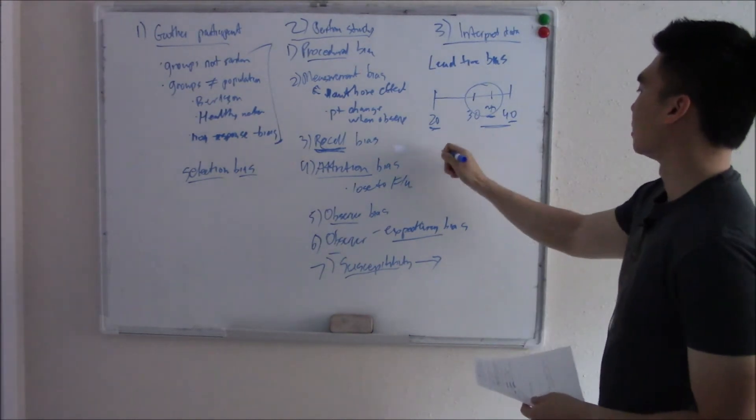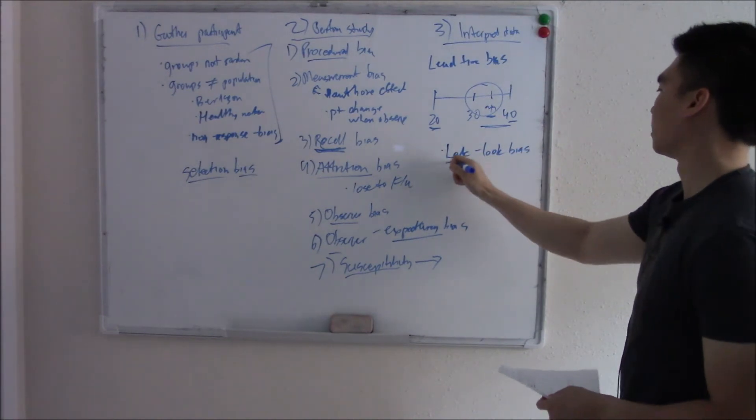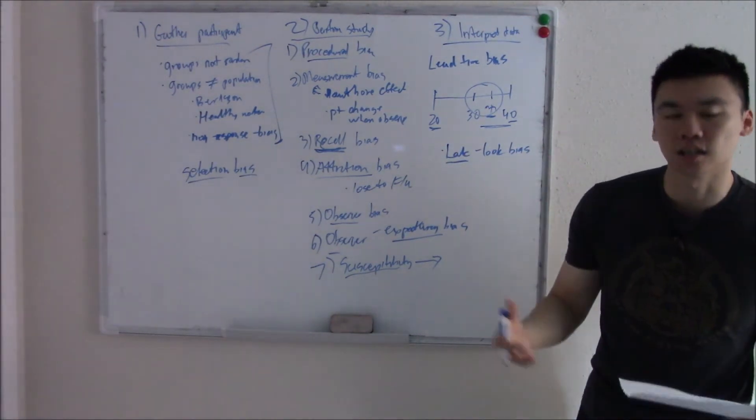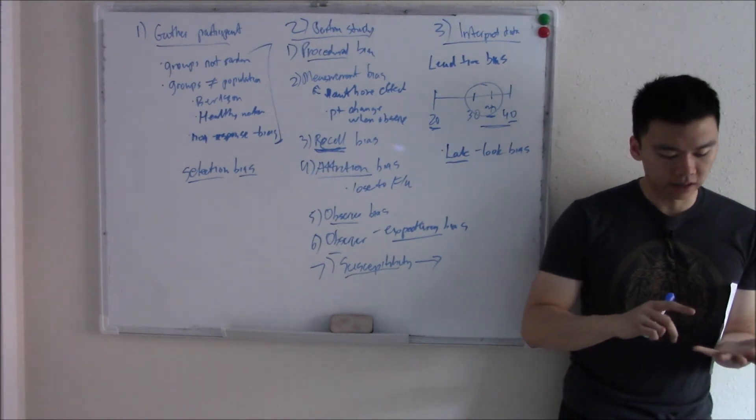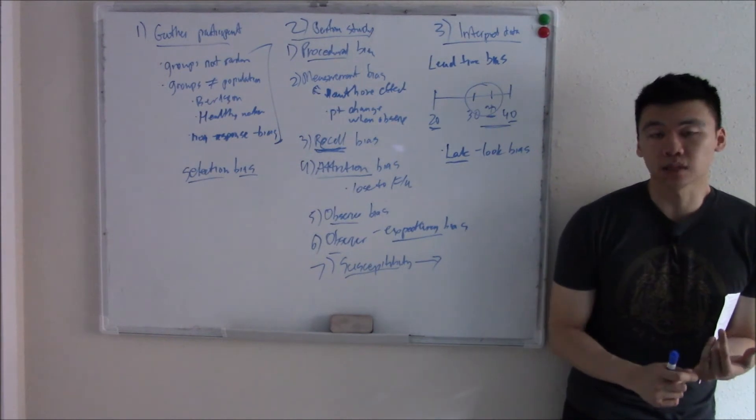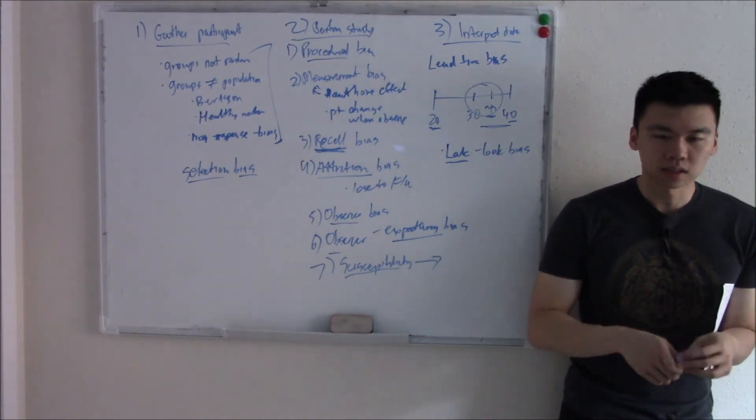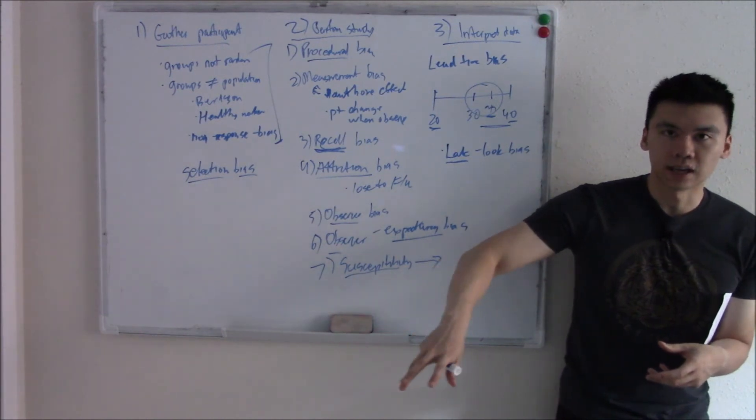Late look bias is another one. What the heck is late look bias? It's when your results are too late to be any good. So let's think of an example about HIV. People with very severe HIV, probably dead. You can't do an experiment with them because they don't exist anymore. So let's say you find a group of people with HIV and they all seem kind of mild. And you think to yourself, hey, HIV, they have kind of mild symptoms, kind of a mild course.